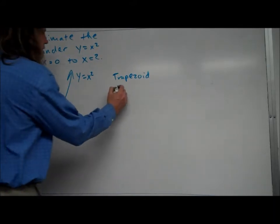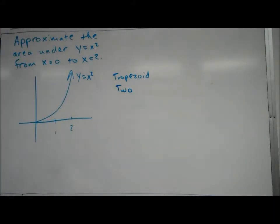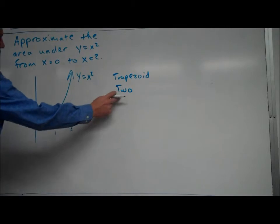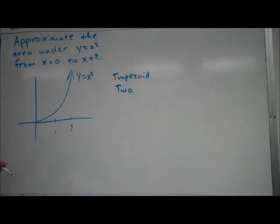So we'll do two trapezoids, and a lot of time I'll ask for the trapezoidal approximation. They'll be the instructions, and I'll tell you how many to use. But in this case, how you do the trapezoids is you actually look at the height at both endpoints, and that's how you make your trapezoid.